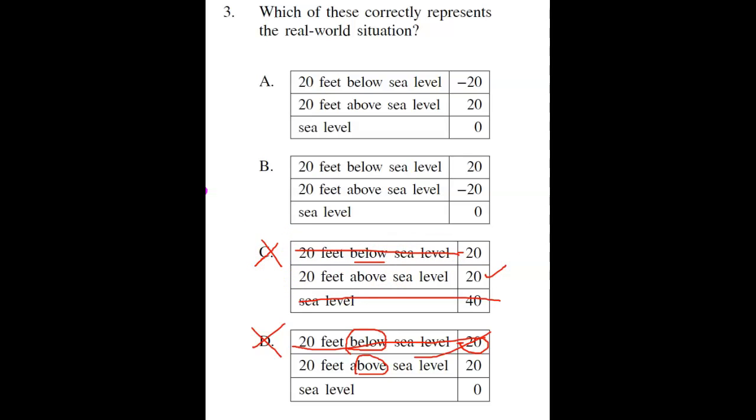If I look at letter B, it says 20 feet below sea level is again a positive. It can't be positive. It's below sea level. And this one says above sea level is the negative, so it's definitely not that. Sea level is 0, and that one is true. Let's look at A. Oh, that means B is not correct.